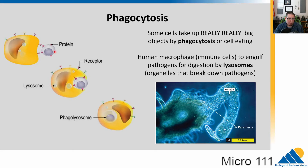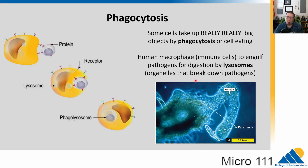They can bring things in and digest them. We also have human macrophages — those are a type of immune cell. They can engulf pathogenic microbes and bring them in for digestion by what we call the lysosome. Lysis means to break. Once the cell brings in the pathogen, it combines it with a lysosome, which has acidic chemicals in it, and will destroy the pathogen. This process is important both for some organisms to eat and for our immune system to destroy bacteria.